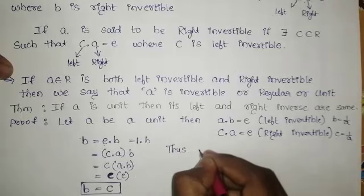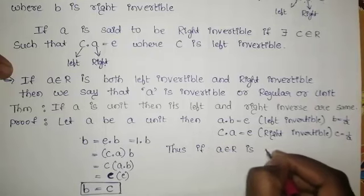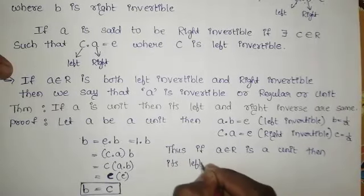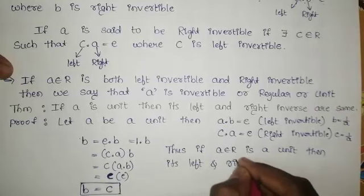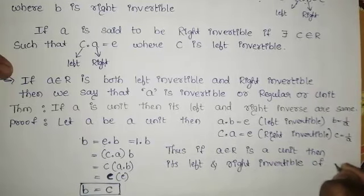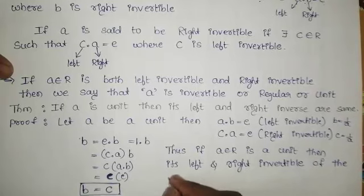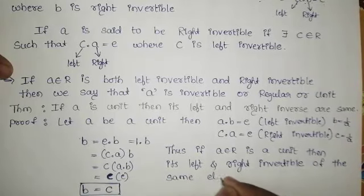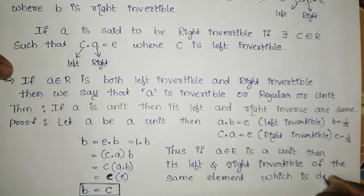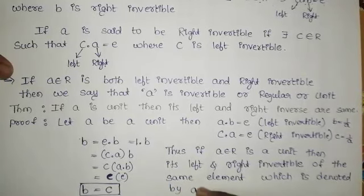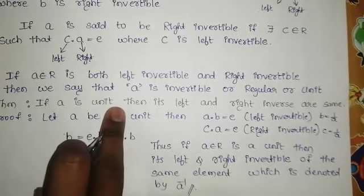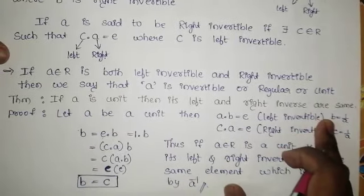Thus, if A belongs to R is a unit, then its left and right inverses are the same element, denoted by A⁻¹. This is our theorem.